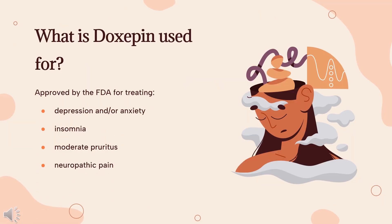Oral Doxepin is approved for the following indications: treatment of depression and/or anxiety; treatment of depression and/or anxiety associated with different conditions, including alcoholism, organic disease, and manic depressive disorders; treatment of psychotic disorders with associated anxiety; treatment of involutional depression; treatment of manic depressive disorder; and treatment of insomnia characterized by difficulties with sleep maintenance.